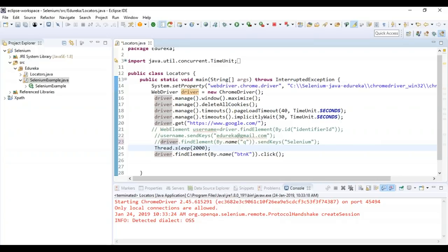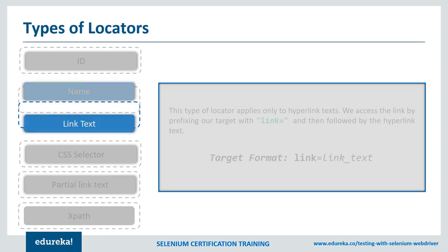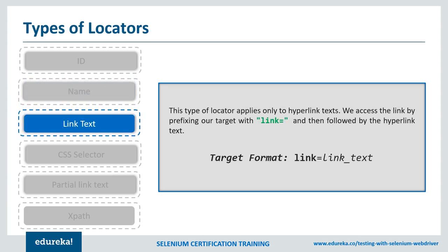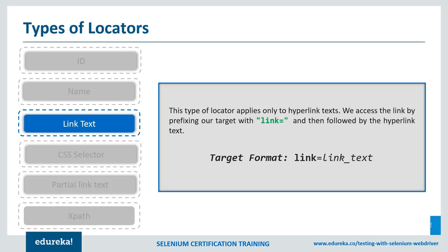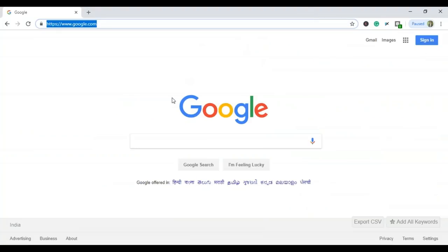Next we have link text. This type of locator applies only to hyperlinks — all hyperlinks on the web page can be identified using link text. The links on the web page can be determined with the help of an anchor tag. The anchor tag is used to create hyperlinks, and the text between the opening and closing of an anchor tag constitutes the link text. Instead of using google.com, let's open Yahoo Mail for this example.